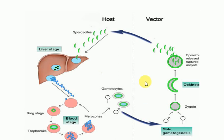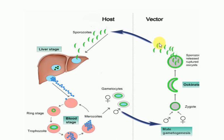First of all, when the vector bites an infected malarial patient, it takes the gametocytes in. The gametocytes form the zygote. The zygote develops into an ookinete, which is the motile form of the zygote. The ookinete penetrates the epithelial cells of the midgut and develops into an oocyst. The oocyst contains thousands of sporozoites. When the sporozoites are released, they migrate to the salivary glands of the vector.